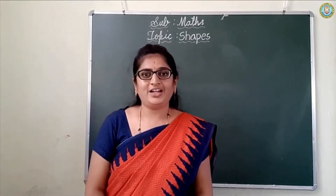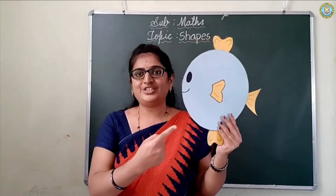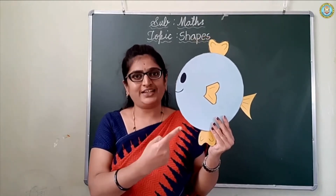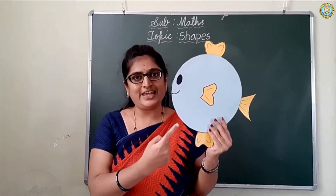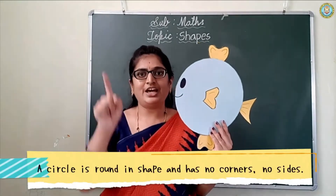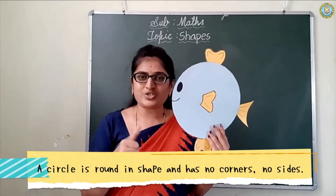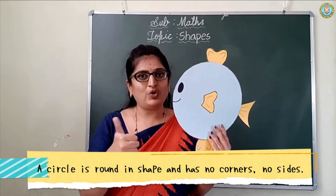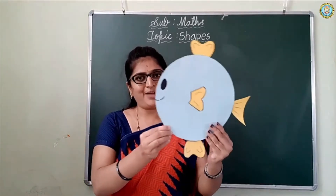Okay, see here. Our first shape is coming here. Which shape is this, children? This is a circle. A circle is a round shape. A circle has no sides, no corners. Okay, bye-bye circle.